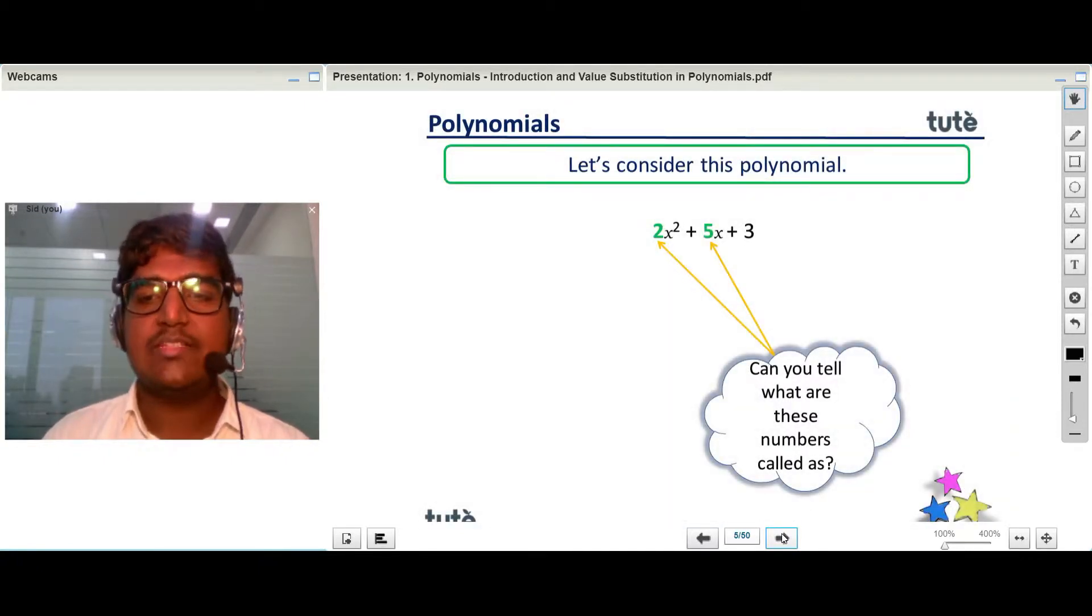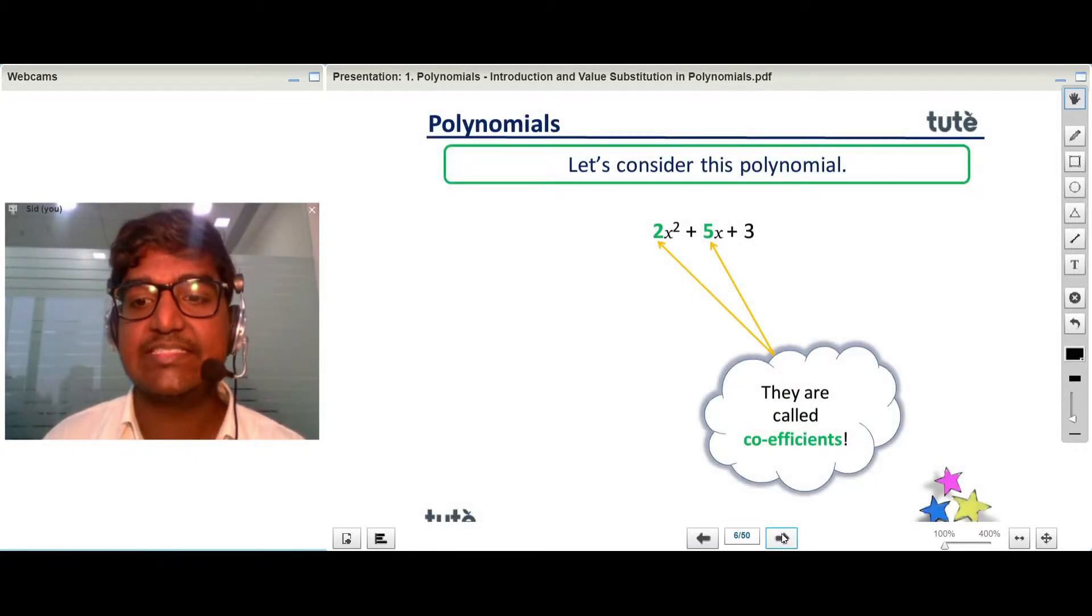Can you tell what are these numbers which are highlighted in green? They are called coefficients because these are the numbers which are associated with the variables.